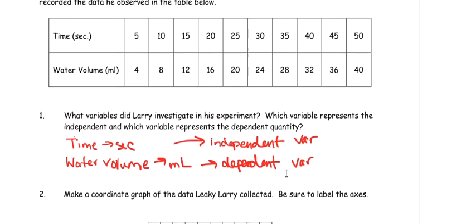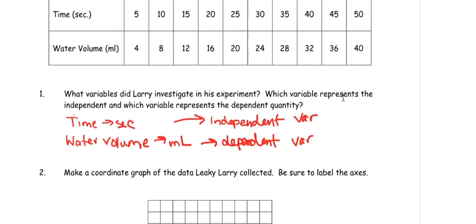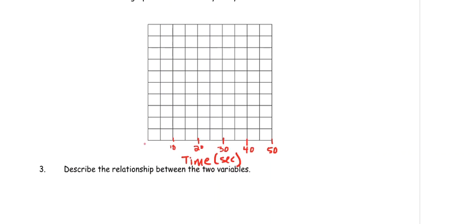And for the y, it's going to be water volume in milliliters, but it's going in fours. So, make sure that this is zero, four, eight, 12, 16, 20, 24, 28, 32, 36, 40. I can't write sideways on my computer right now, so I'm just going to write it horizontally. Normally, you would rotate it. And this is water volume in milliliters.